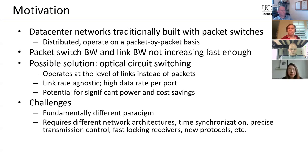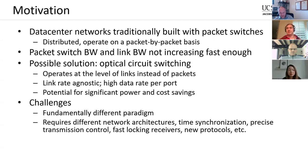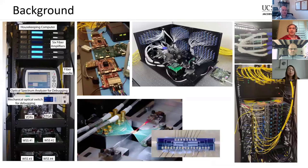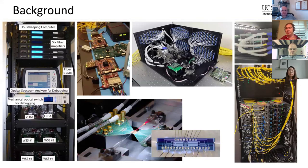Traditionally, these networks have been built using electrical packet switches, which are great because they work in a distributed fashion and operate on a packet-by-packet basis. However, packet switch bandwidth and link bandwidth are not increasing fast enough to keep up with demand. One possible solution is optical circuit switching, where instead of looking at each packet we make and break physical connections. Operating in the optical domain means it's agnostic to link rate — you can upgrade to faster links without replacing the switch, which offers significant cost and power savings. However, this requires different network architectures, time synchronization, fast-locking receivers, and new protocols across the entire stack.